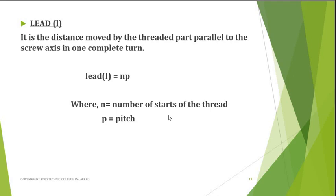The number of starts in a thread can be single start, double start, or triple start — these are called multi-start threads. For a double start thread, there are two parallel threads. The formula lead equals n times p gives the distance moved per rotation, where n is the number of starts and p is the pitch.